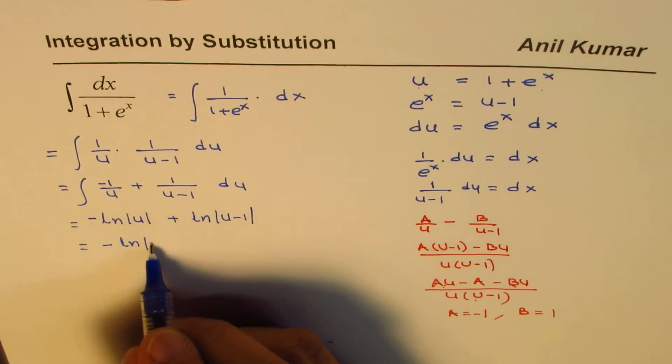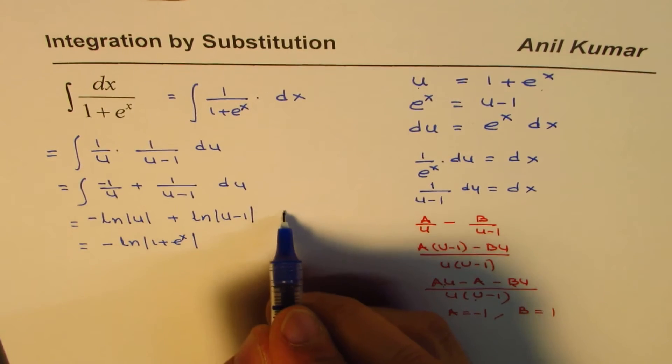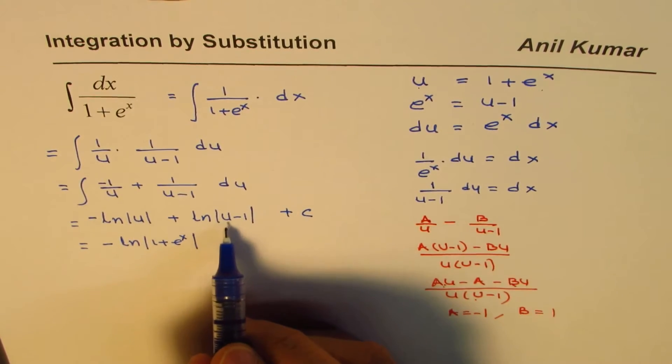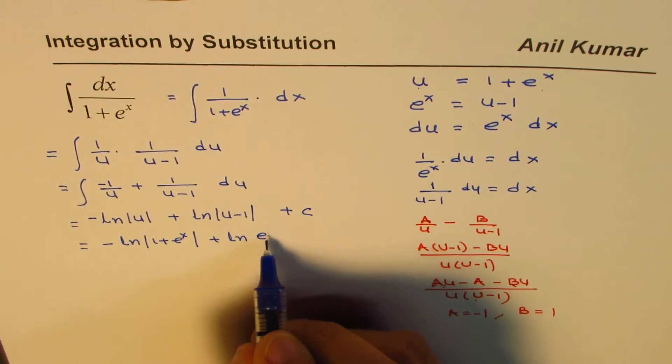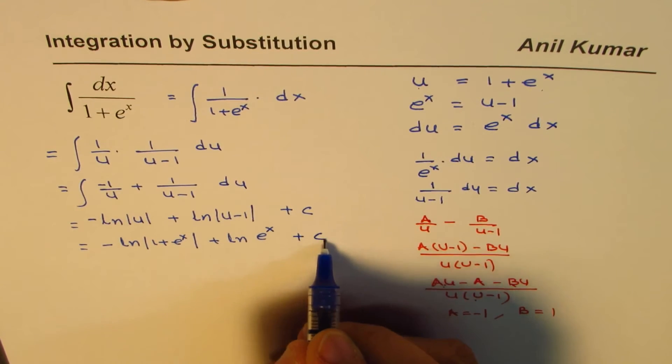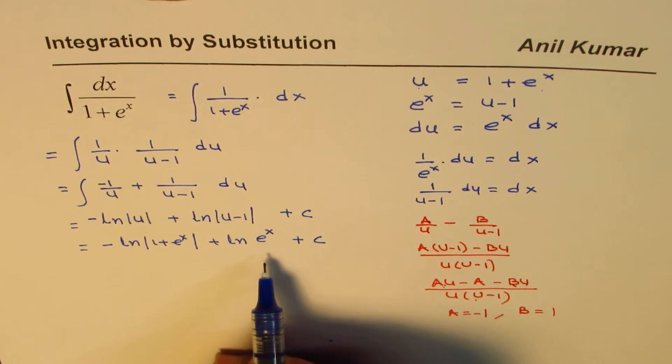So I can replace this. Ln u I can write as minus ln of 1 plus e to the power of x, and here of course a constant. And ln u minus 1 is e to the power of x, so you get plus ln e to the power of x plus c. Now ln e to the power of x will be just x.